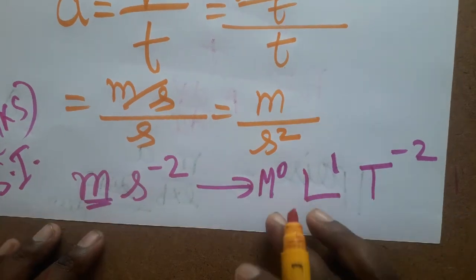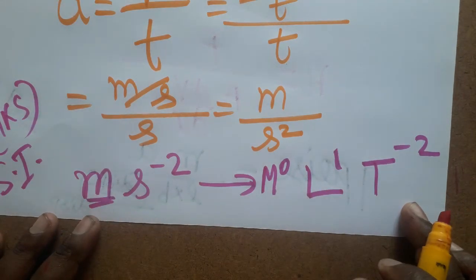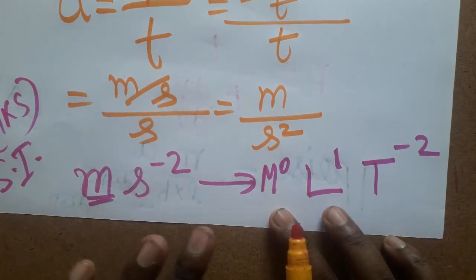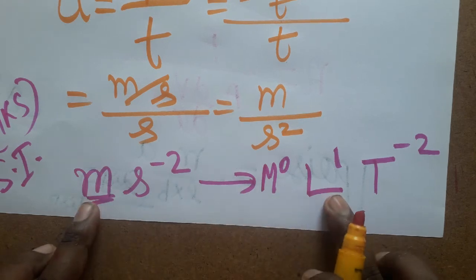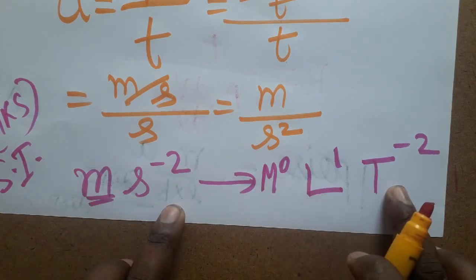Mass we can take as zero in the dimensional formula M L T. Mass is not there, so power will be zero. Length is power one. Time is there, it is T power minus two.